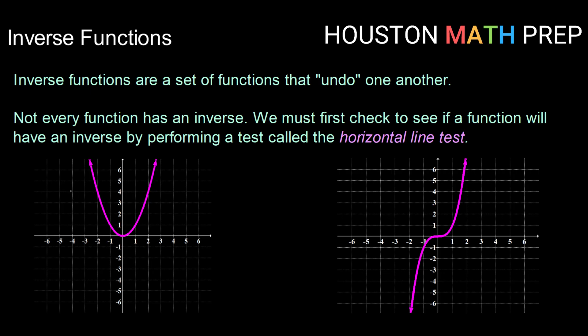So it works about the same way. You're going to draw a horizontal line or drag a horizontal line through your graph. If that horizontal line touches your graph more than once then your graph fails the horizontal line test and will not have an inverse.